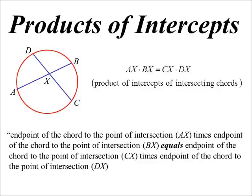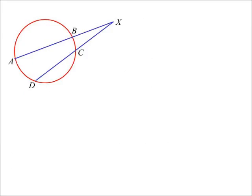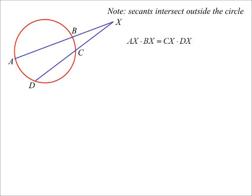Thinking of it that way, when I said all these theorems are the same, I can still use the same idea now where instead of talking about intersecting chords, I'm talking about intersecting secants, because the rule is still the same. It's still A to X times B to X, is equal to the endpoint of the other secant to the point of intersection times the other endpoint to the point of intersection. The only difference in the reason is: intersecting secants. Note that secants always intersect outside the circle.